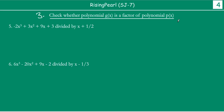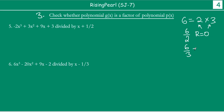Let us think about what this question means. If we write 6 as 2 times 3, then we say both 2 and 3 are factors of 6. That means if 2 is a factor of 6, then when you divide 6 by 2, the remainder is equal to 0. Similarly, if 3 is a factor of 6, then when you divide 6 by 3, you get remainder as 0. So in both cases, your remainder should be 0.